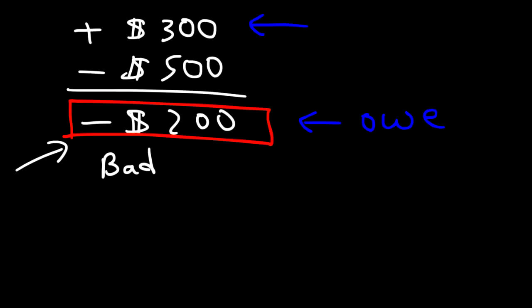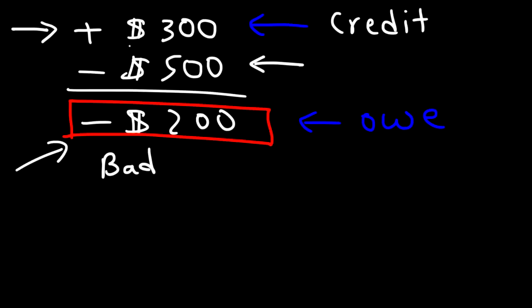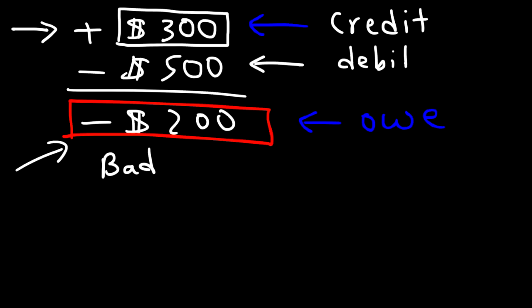Looking at the first deposit — $300 — that is a credit. Whenever you add money to your account, you are credited, and a credit is always reflected by a positive change in your account value. When you take out money, it's called a debit, and a debit is always associated with a negative change.